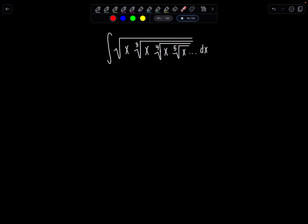So we have the indefinite integral of the square root of x, underneath that is the cube root of x and then the fourth root of x, fifth root of x, a bunch of nested radicals and this goes on forever, dx.